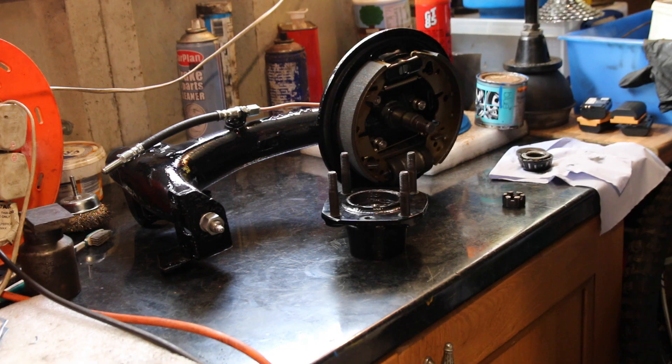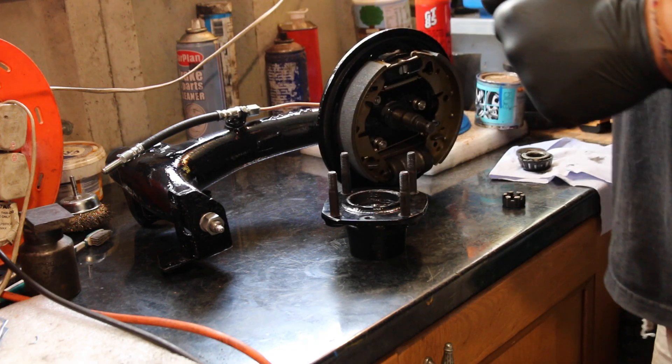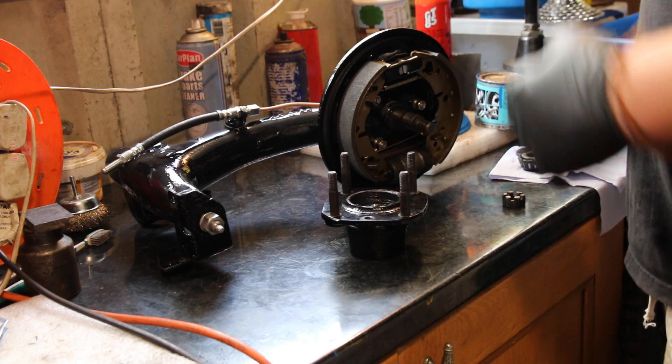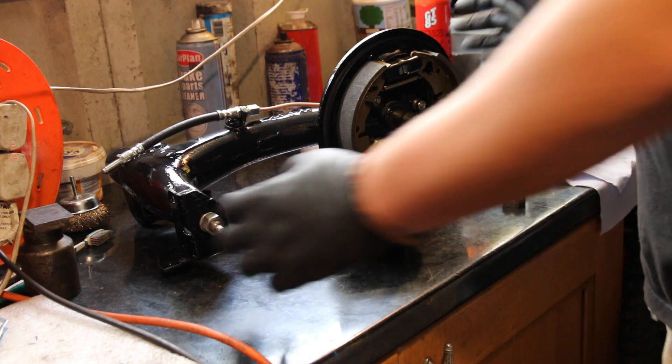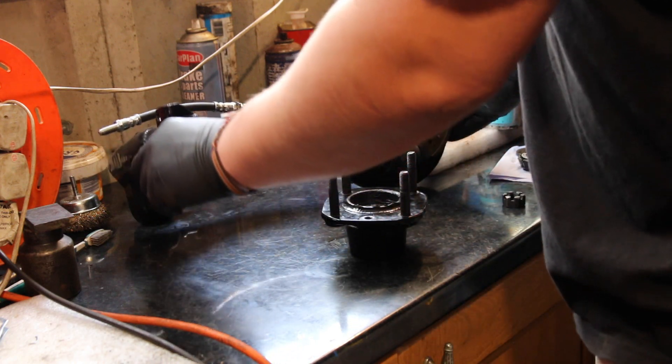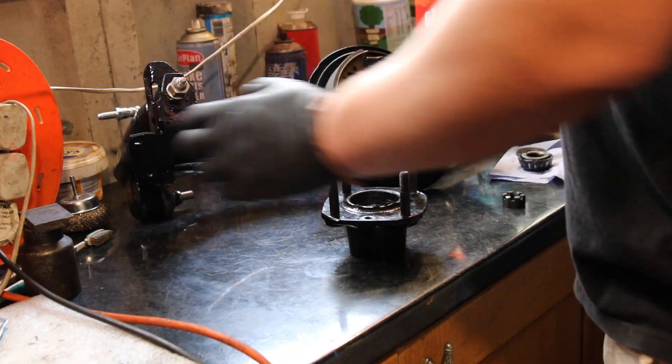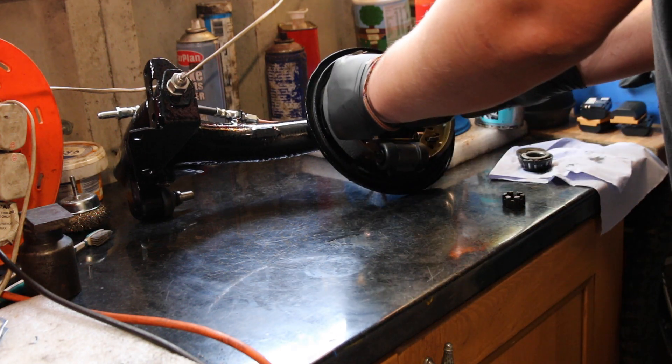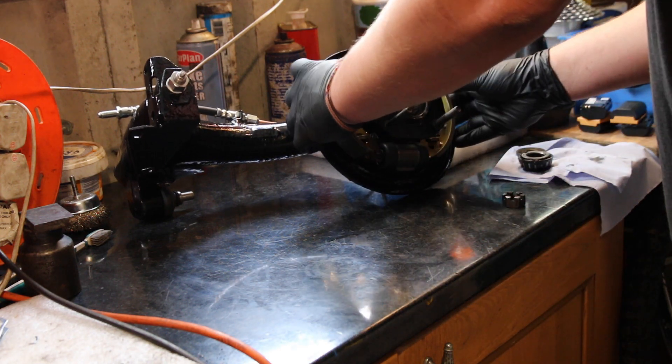Okay, so now I've got the rear radius arm back on the bench. I can fit the hub back up and I can fit my freshly painted drum as well. Just going to prop this up slightly so you can hopefully see better.